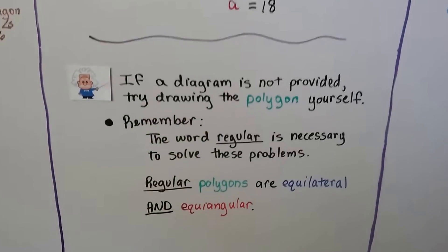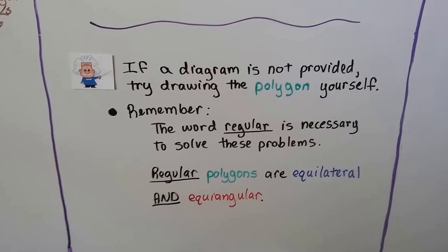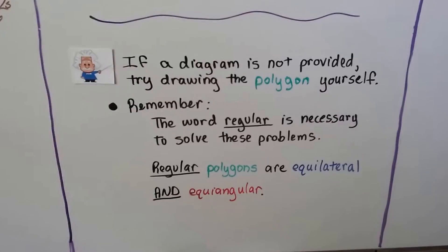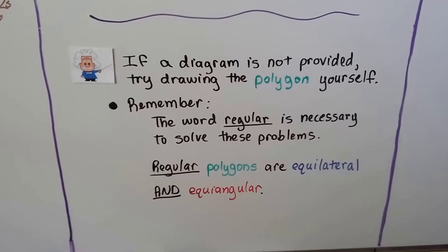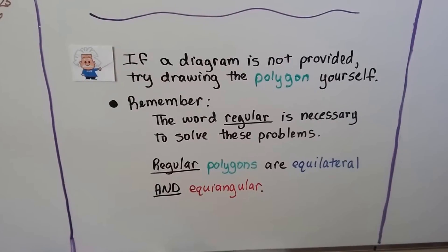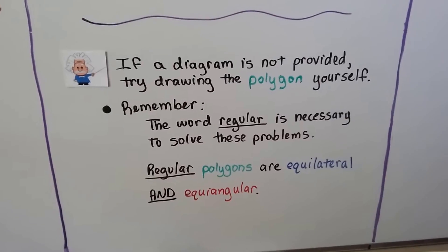If a diagram is not provided, try drawing the polygon yourself. Remember, the word regular is necessary to solve these problems. Regular polygons are equilateral and equi-angular.